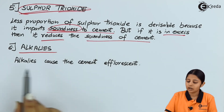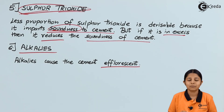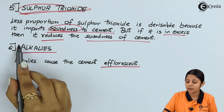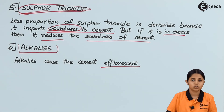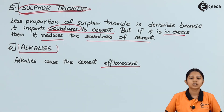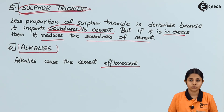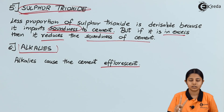Finally, we have alkalis. Alkalis cause the cement to be efflorescent, which means that the cement will be sound, have good volume, and good color. This happens with the help of small amounts of alkalis present in the water. In today's session, we studied the functions of different ingredients present in cement: the first and most important ingredient was Lime, which provides good strength and quality. Other ingredients such as alumina, silica, iron oxide, sulfur trioxide, alkalis, etc. are also needed.